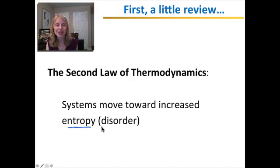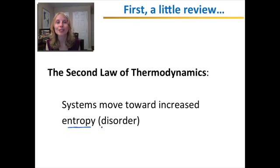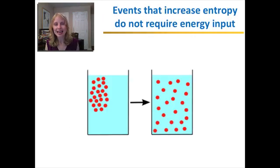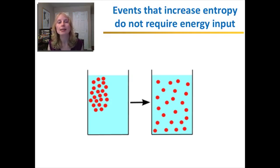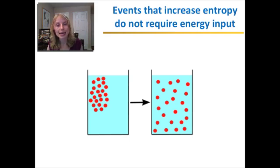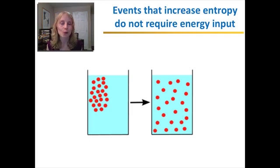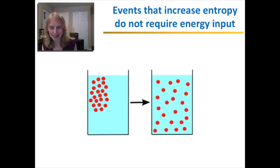The example that's most commonly used is think about your room. What does it have a tendency to do? It has a tendency to become more and more messy, more disordered. So any process that increases entropy, increases disorder, is spontaneous — it does not require energy input. You cleaning your room, making it more ordered, does require energy on your part. But the room becoming disordered does not require energy.